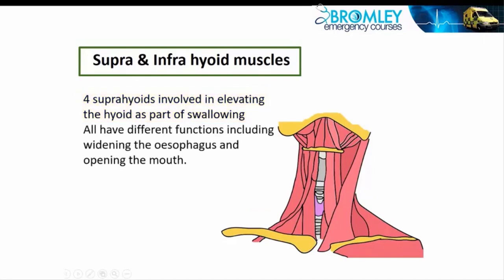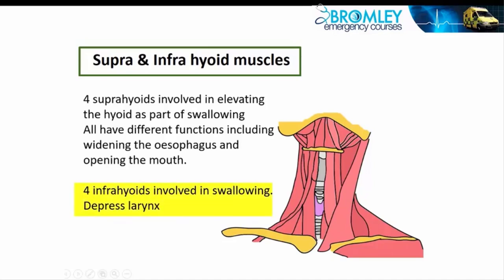The college says we don't need to know more than that about the suprahyoids. The digastric, for example, is also involved in opening the mouth very wide. The infrahyoids — again four of them — are often referred to as the strap muscles. The omohyoid runs from the hyoid down to the top of the scapula, but there are others as well. These are involved in the opposite action: depressing the larynx and pulling it down during the swallowing process. The suprahyoid muscles tend to work earlier in swallowing and the infrahyoids after that — but that's really all we need to know about these muscles.